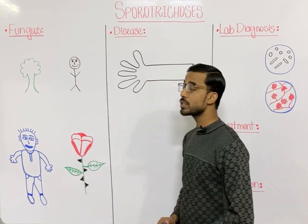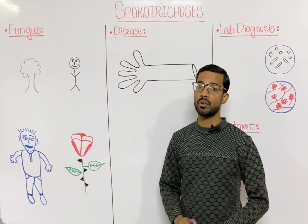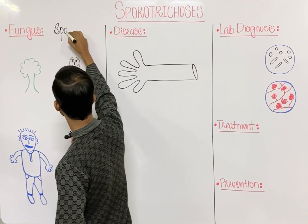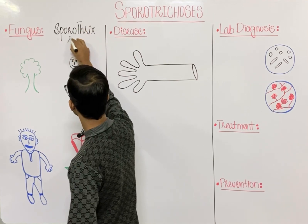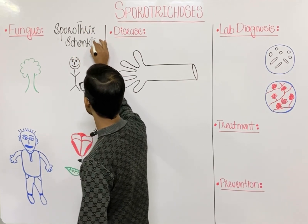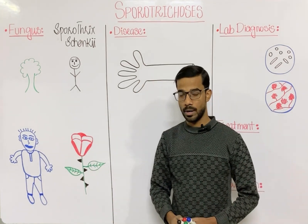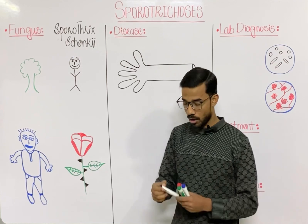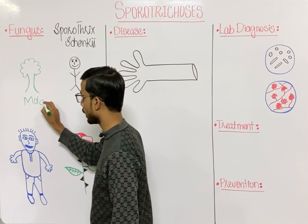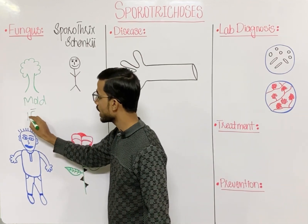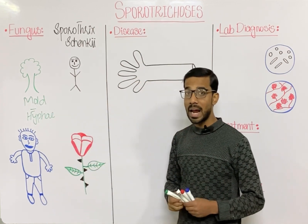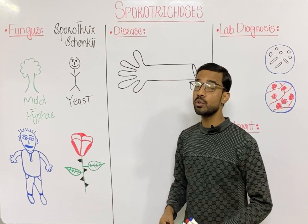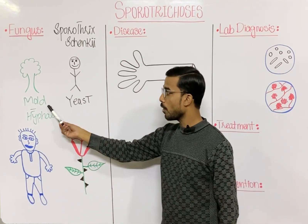The most important fungus that causes sporotrichosis is Sporothrix schenckii. This fungus exists in two forms: the mold form and the yeast form, which is why it is classified as a dimorphic fungus. The mold form exists on plants as hyphae, while the yeast form exists in humans.